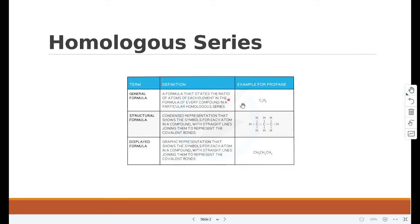The general formula states the ratio of atoms of each element in the formula of every compound. The structural formula is a representation that shows the symbols for each atom in a compound with straight lines joining them to represent the covalent bonds.